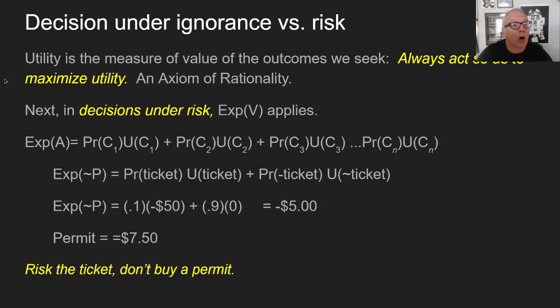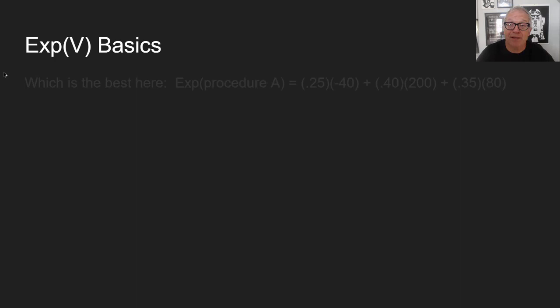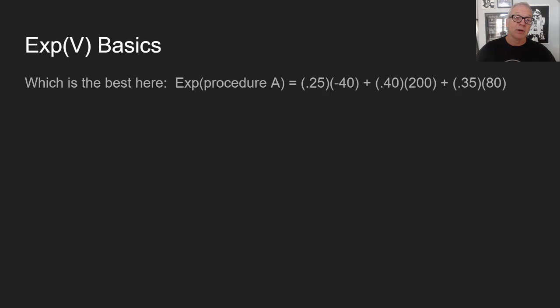The cases we want to look at today are cases where you don't know the probabilities. Here's another example of the basics of expected value. Suppose you've got a medical procedure — medical procedure A — where there's a 25% chance of minus 40 utility, a 40% chance of plus 200 utility, or a 35% chance of plus 80 utility.